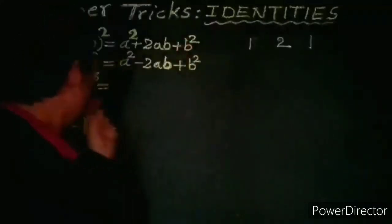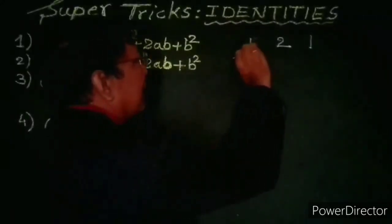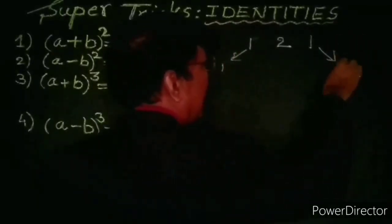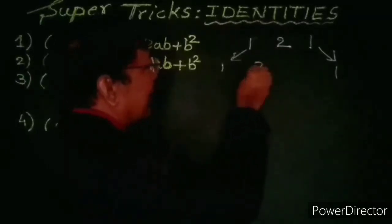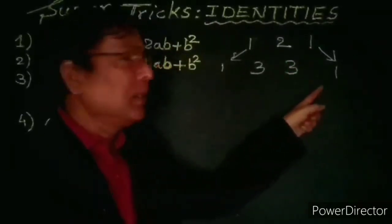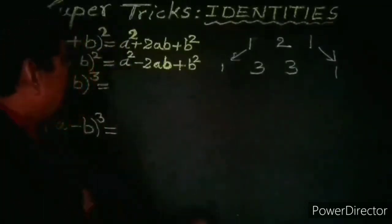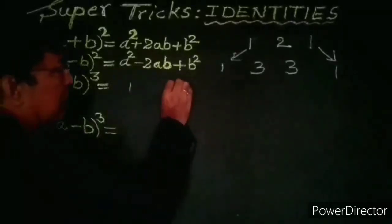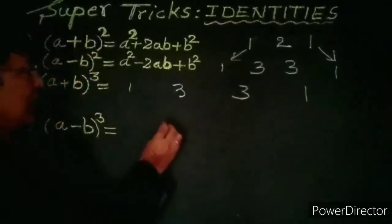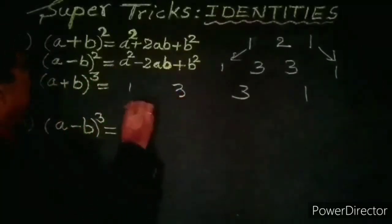Now, to write (a+b)³, we write new coefficients. We write 1 at the start and 1 at the end. Then 1+2 = 3 and 2+1 = 3. So the four coefficients for (a+b)³ are 1, 3, 3, 1.